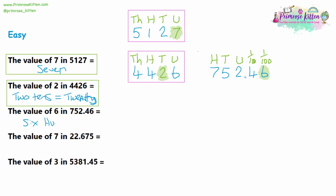For hundredths, write 100 and put 'THS' on the end. If you say 'hundreds,' that's 100 times bigger than your units. And if you say 'hundredths,' that's 100 times smaller than units.